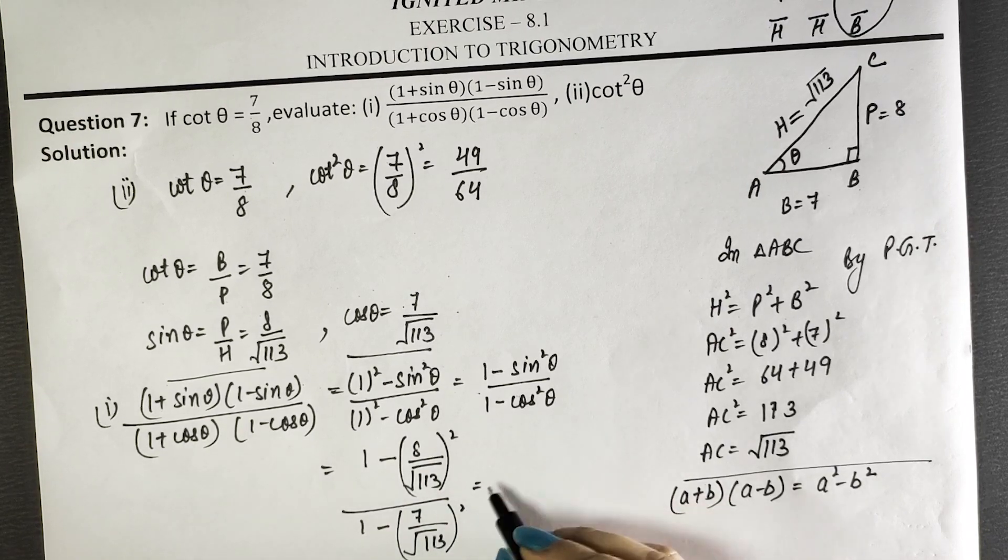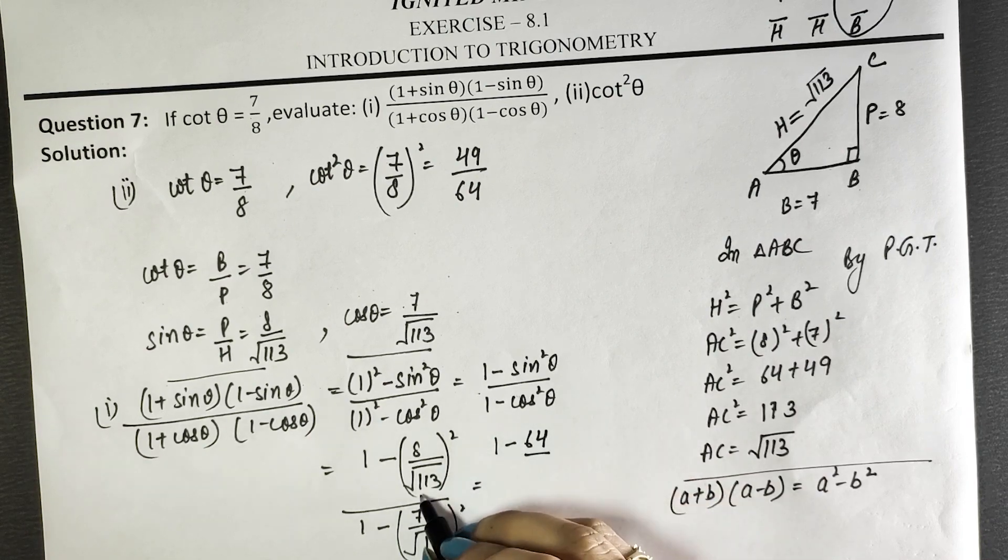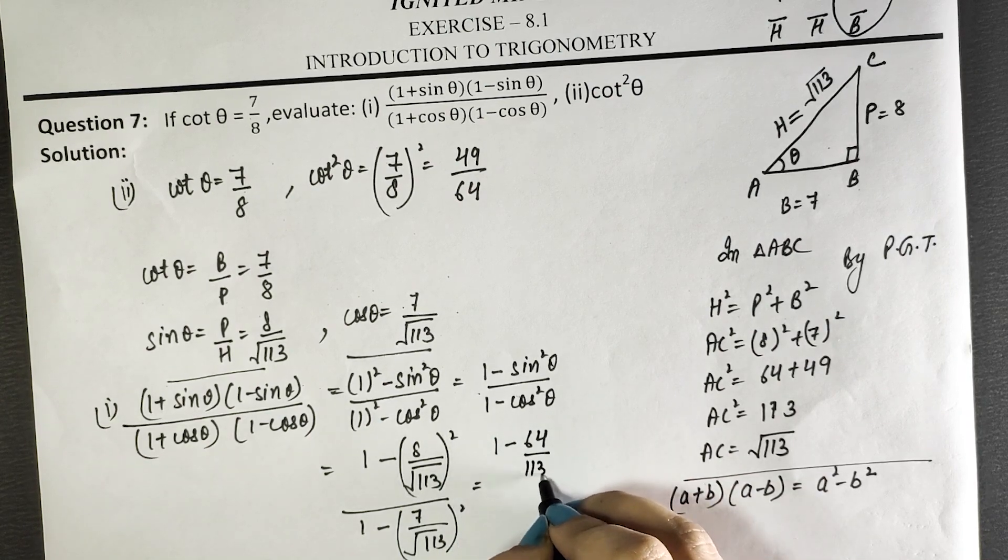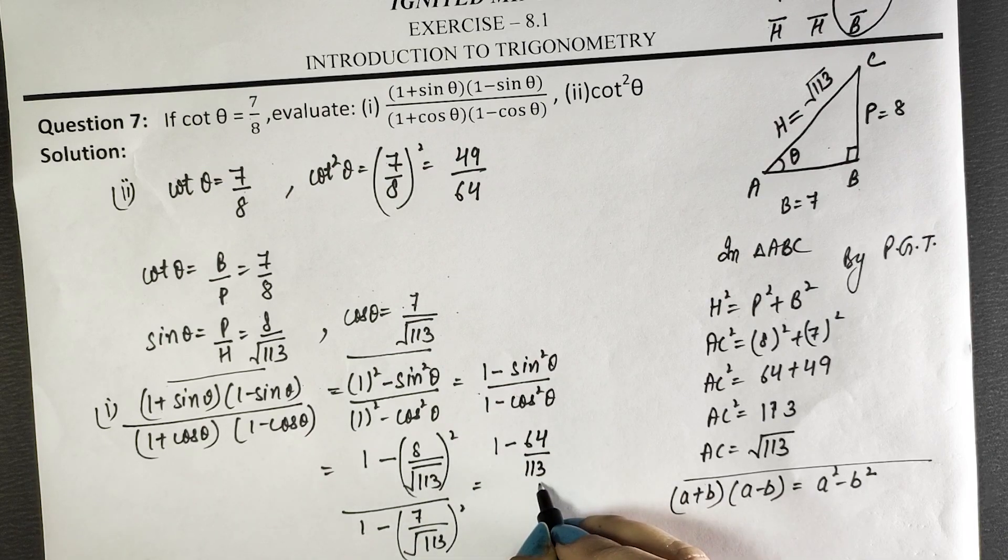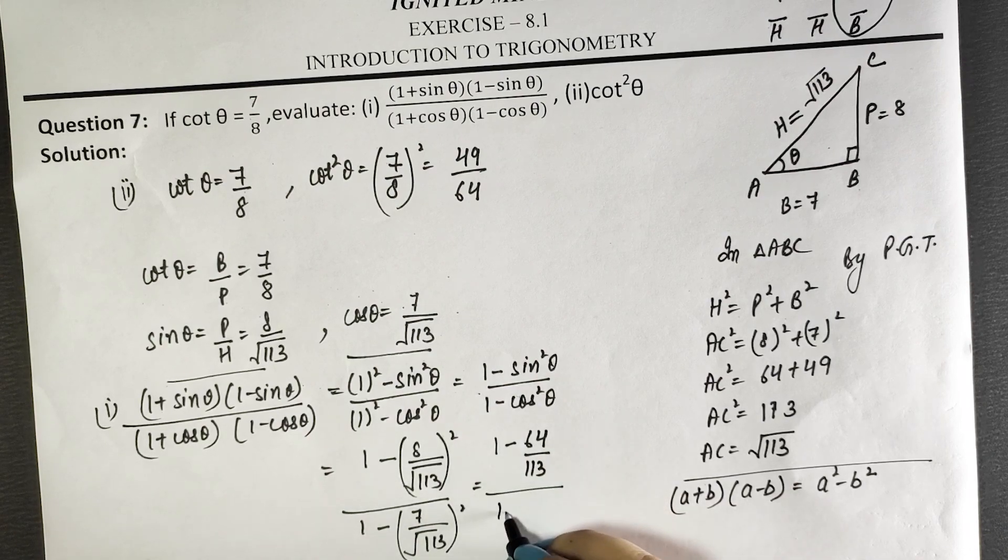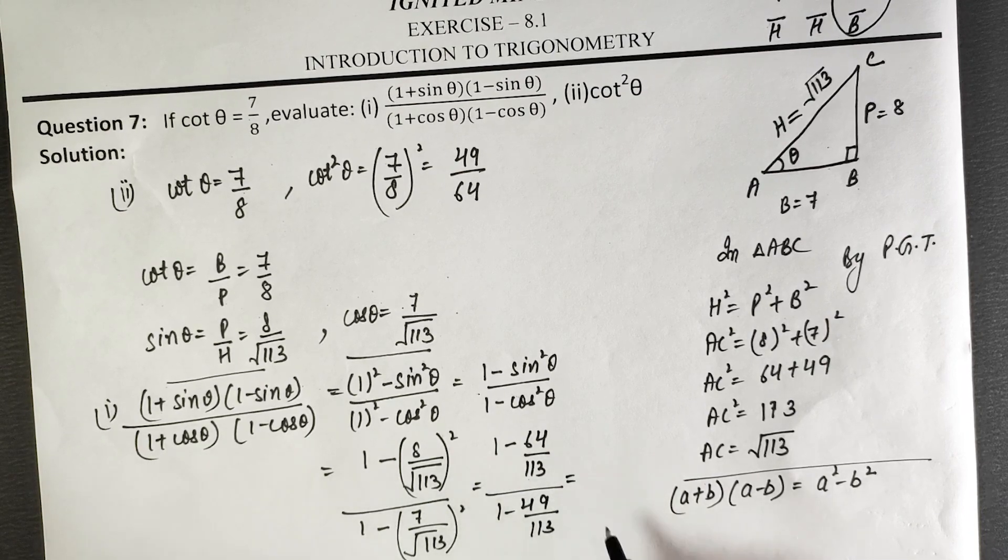Now, what do we do? 1 minus 8 squared, root 113 is 113. The root and square cancel, so you have 1 minus 64 divided by 113. Similarly, 1 minus 49 divided by 113.